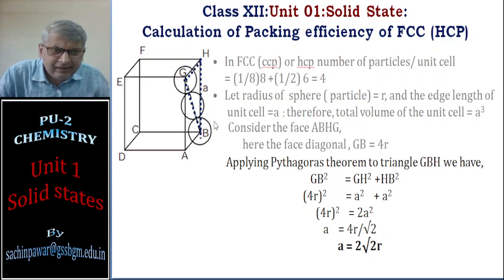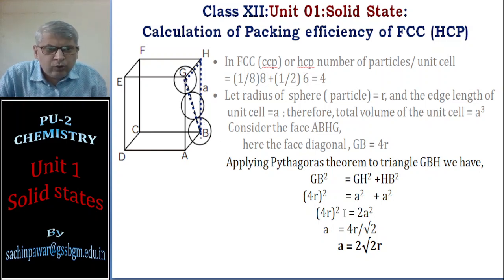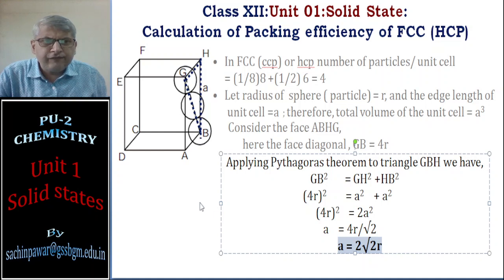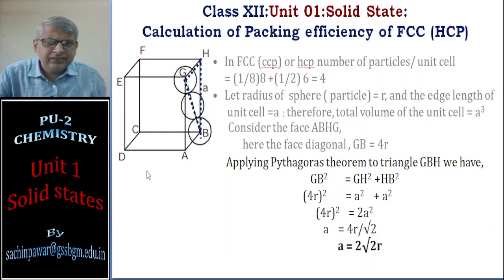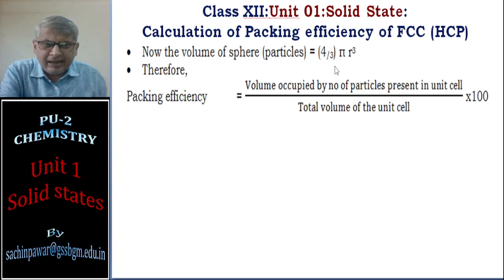Using triangle GBH and the Pythagorean theorem: GB² = GH² + HB². The face diagonal GB = 4r, and GH and HB are each edge a. So (4r)² = a² + a², giving 16r² = 2a². Therefore a = 2√2 r, which is the relation between edge length and radius for FCC.